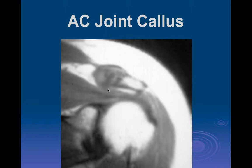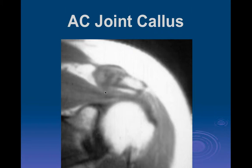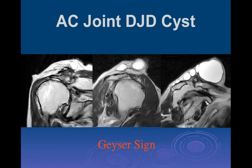This callus formation can't be seen really well on a plain film. But what you can see is it's depressing the distal aspect of the supraspinatus muscle in this location with the abducted shoulder. There is increased signal intensity on this T1-weighted image within the proximal part of the tendon where it gets impinged by this callus formation in abduction and adduction. This is AC joint impingement due to callus formation.